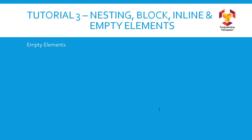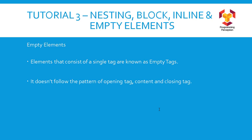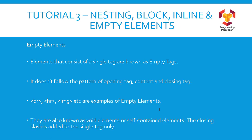The last element type to discuss is empty elements. These elements do not have any content, so they consist of a single tag only. They do not follow the pattern of opening tag, content, and closing tag. br, hr, and img are examples of empty tags, and we will discuss them soon. They are also known as void elements or self-contained elements — empty tags, empty elements, void elements, and self-contained elements all refer to the same thing. The closing slash is added to the single tag itself, written after the tag name, not before it.